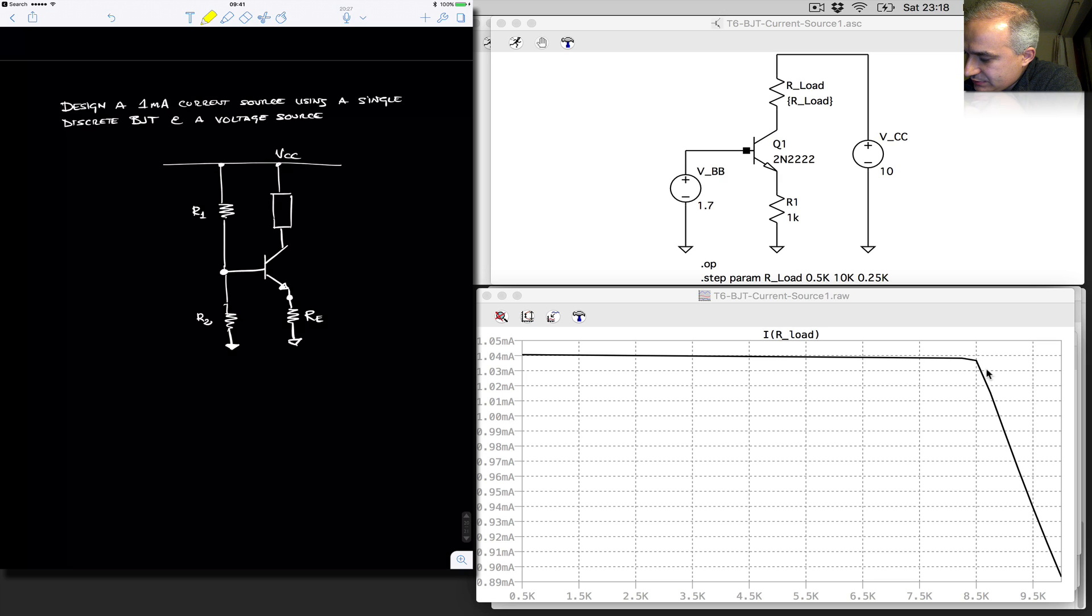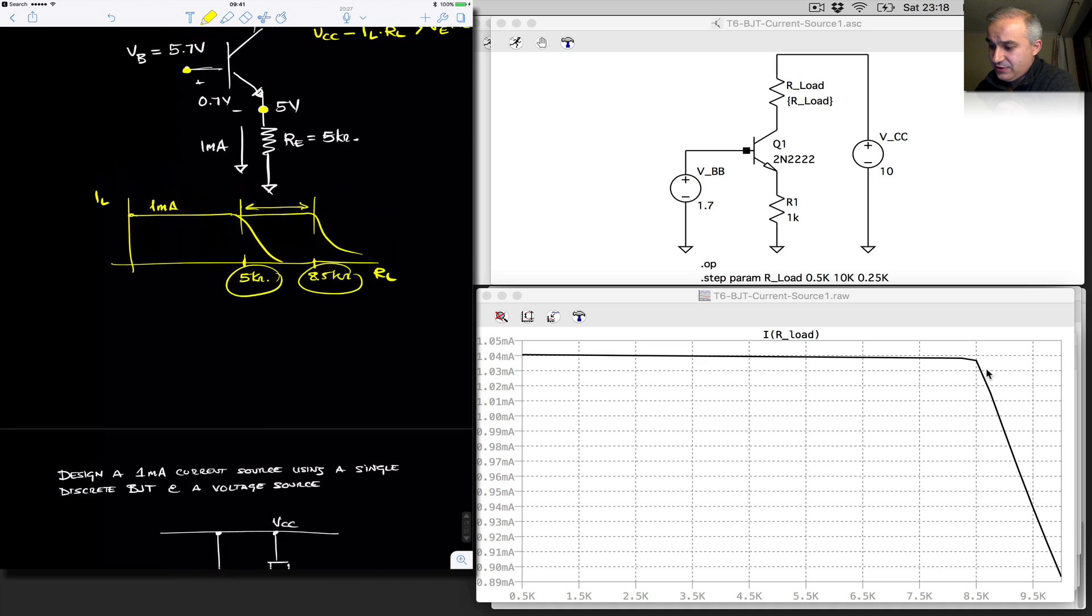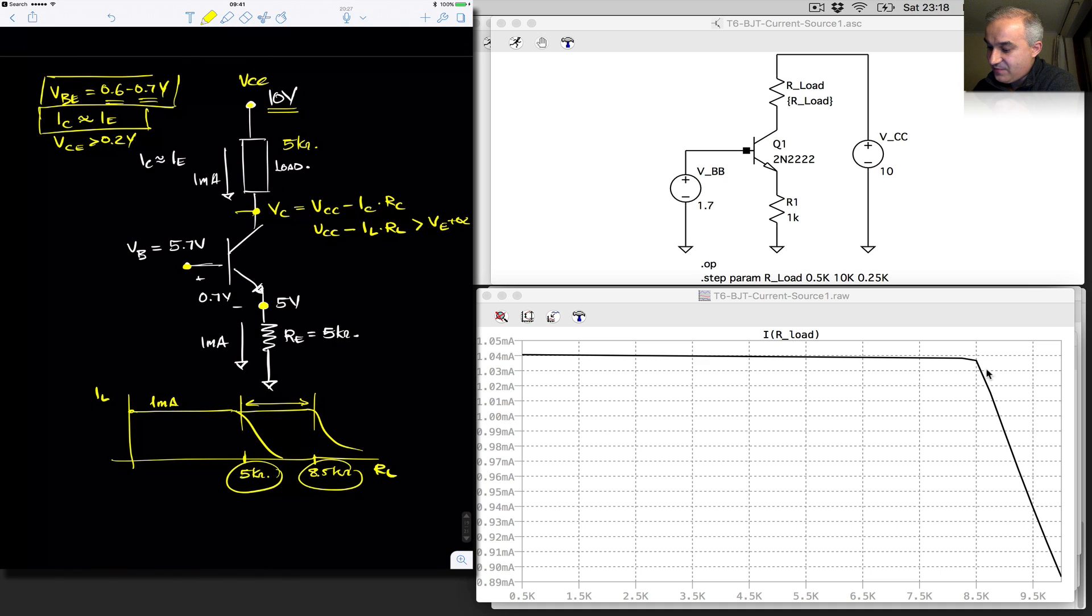So our step 1 is still going to set VE approximately equal to 1 volt. Remember why? We want the VE to be sufficiently low, not to limit the compliance. We did it as another example before, when we set it at 5 volts. So 5.7 volts at the base, voltage drop of 0.7, 5 volts at the emitter.